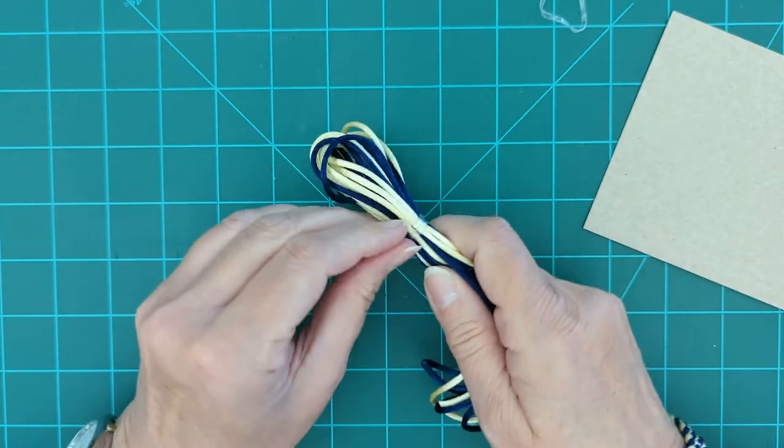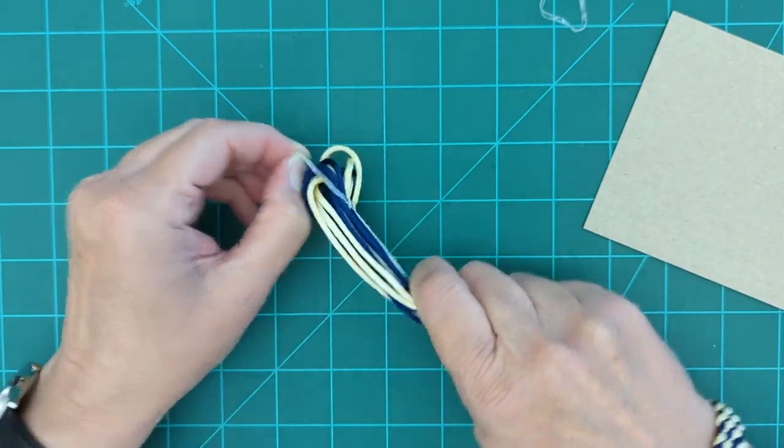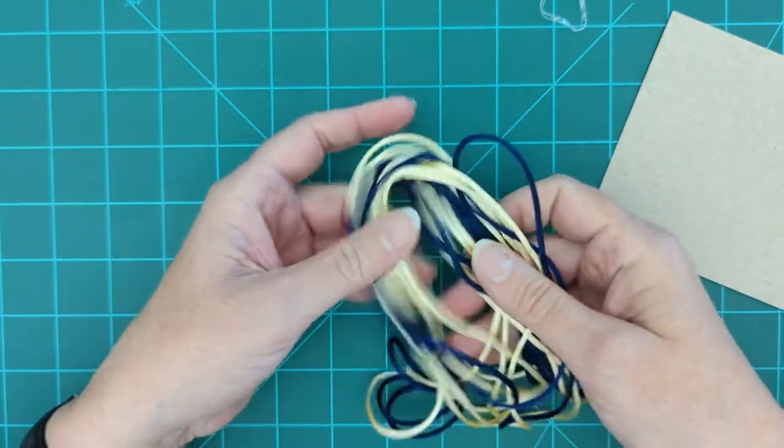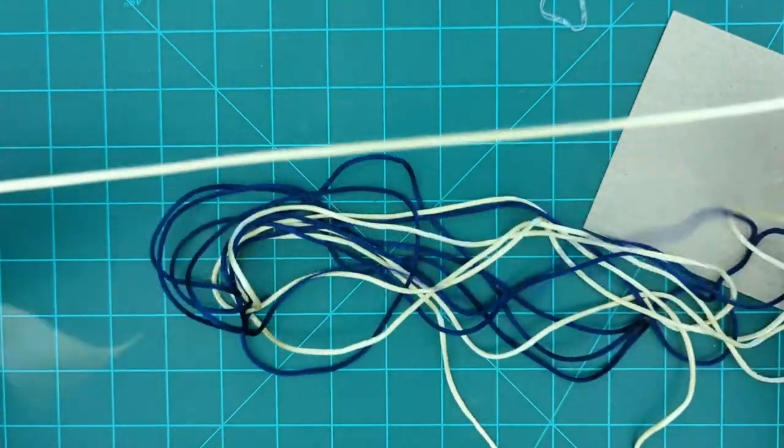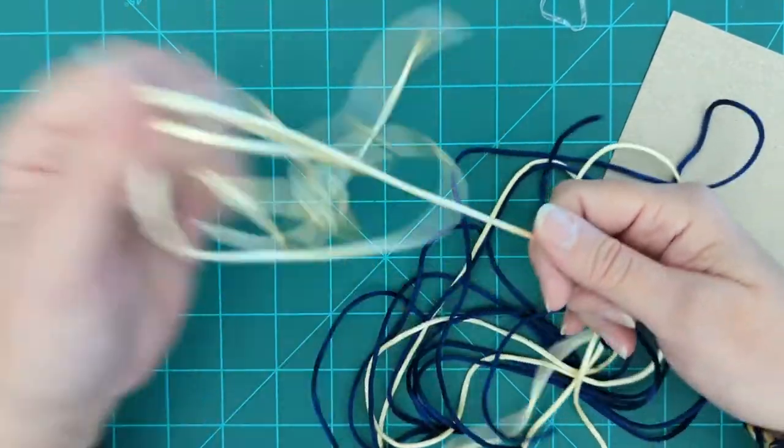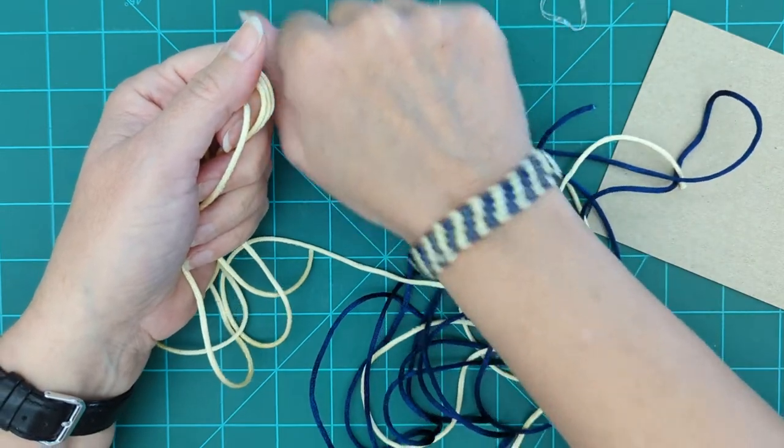And then we also have our cord. Now this is rat tail cord. They call it that because it kind of looks like a rat tail. It's satiny, it's kind of shiny, and you have three yards each of two colors, and that's what we'll need to make a bracelet like this.